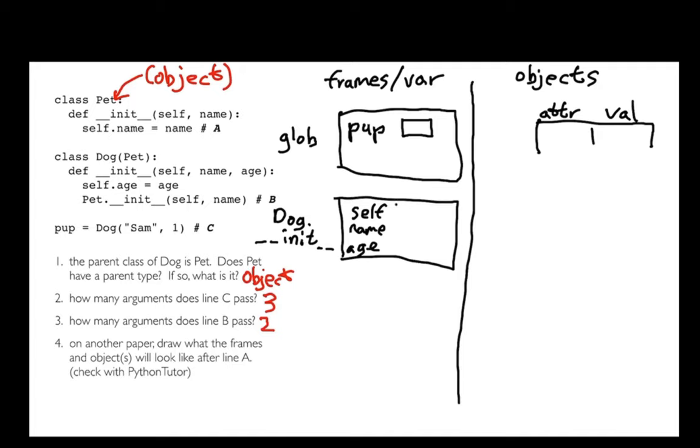I can see that that method has three parameters. That's one of the first things I like to draw when I make a new frame. I'll have self, I have name, and I have age. Each of those is a box. The self box is a reference to my new object. Name is just Sam, and age is just one.